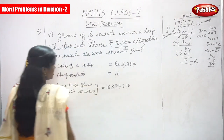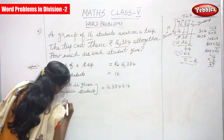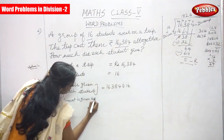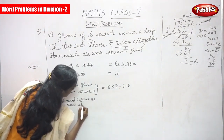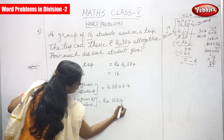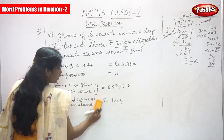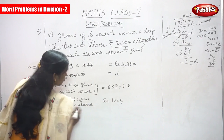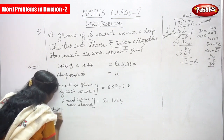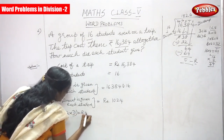The answer is 1024. Amount given by each student is equal to Rs. 1024. But you must check whether the answer is right or wrong, so you have to use the check method. The check method formula is: quotient × divisor + remainder = dividend.